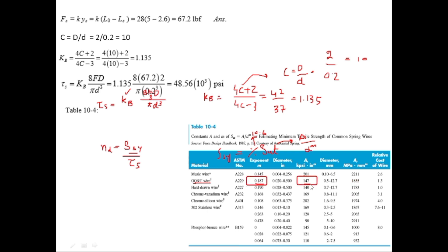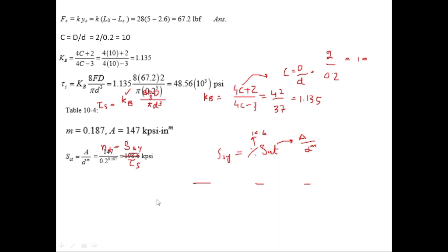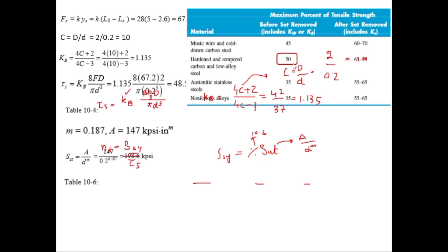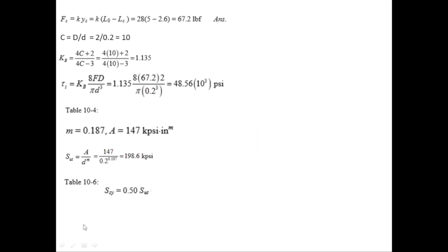Let's find this percentage from table 10.6. For hard and tempered wire before set removal it is 0.5 or 50 percent. So 50 percent of SUT equals 99.3 kpsi.